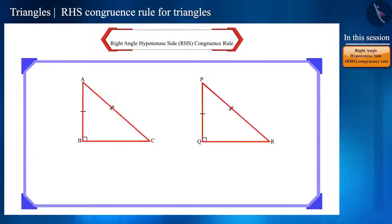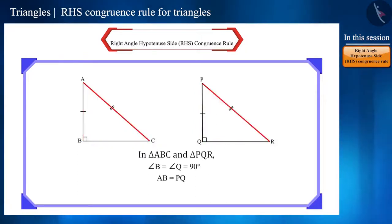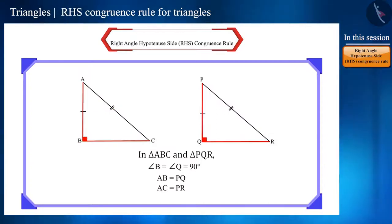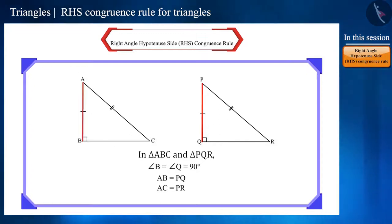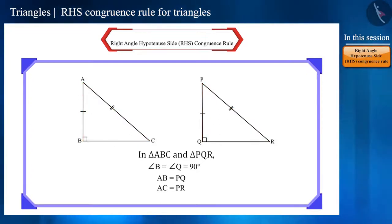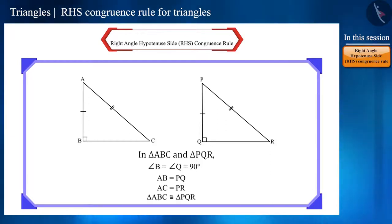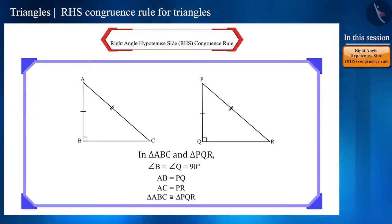We can draw two such right angle triangles easily which satisfy all three conditions. In these two triangles, an angle — which is the right angle — is equal, and one side and the hypotenuse are also equal. Are these two triangles congruent? Yes, these two triangles are congruent.